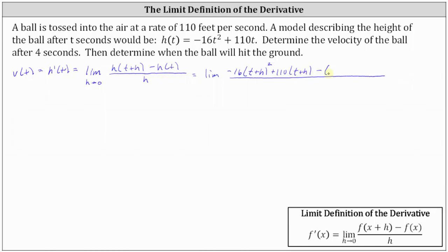And then we have minus h of t, which is minus the quantity negative 16t squared plus 110t. It is important that we have negative 16t squared plus 110t in parentheses so that we're subtracting the entire function. All this is divided by h as h approaches zero.